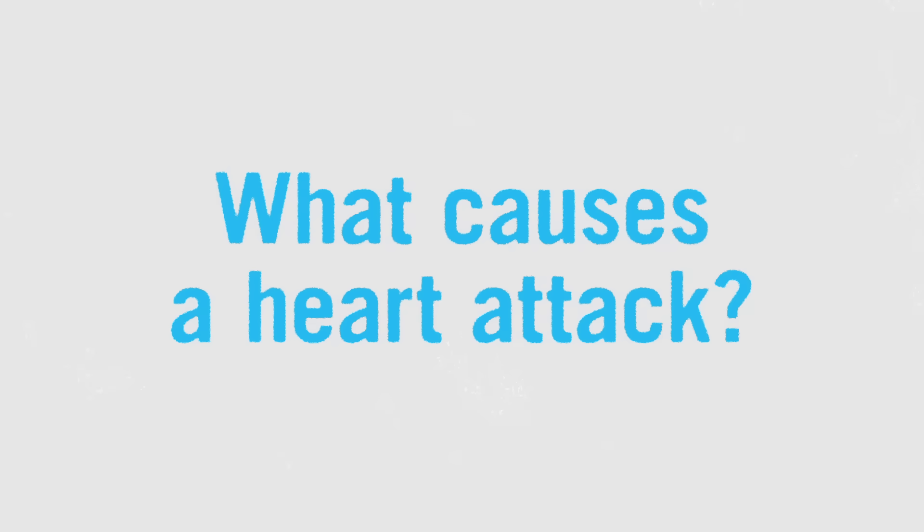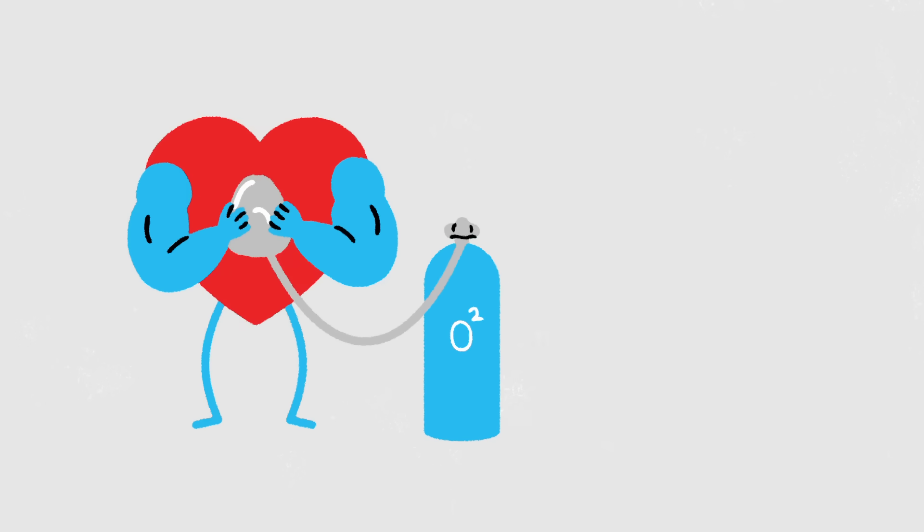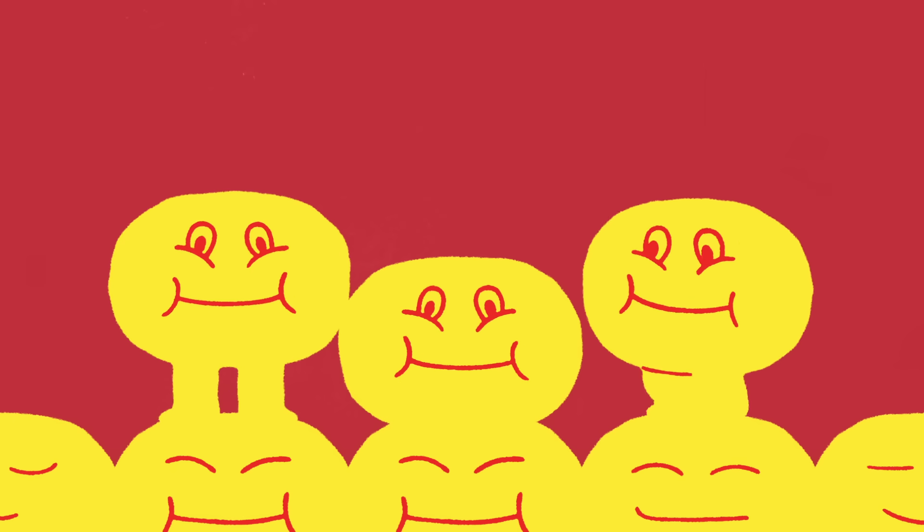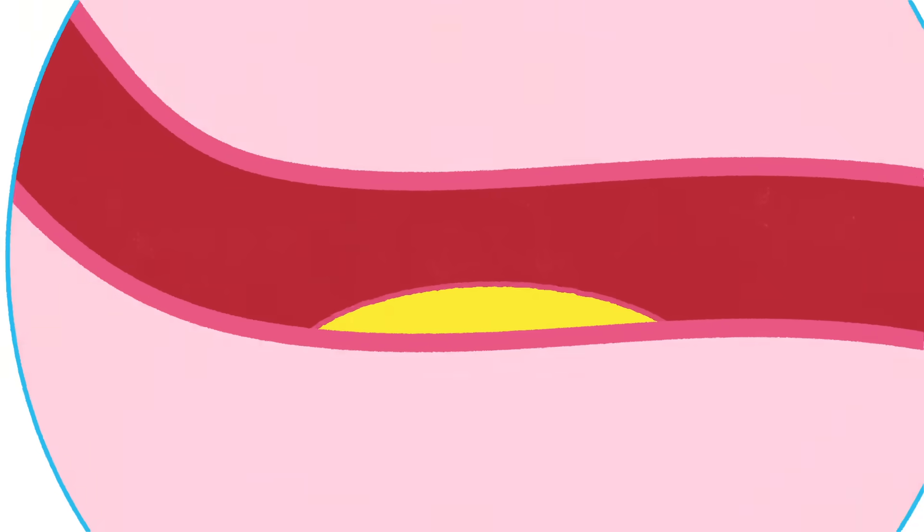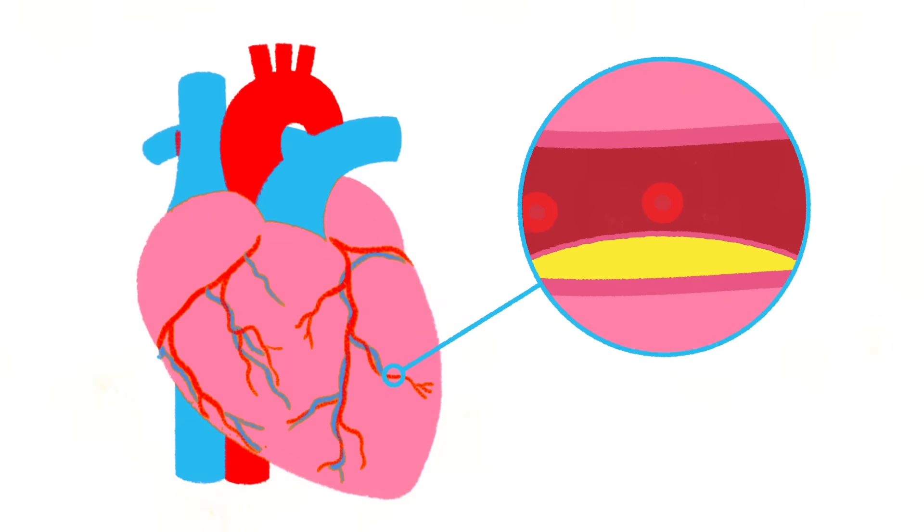So what causes a heart attack? Like all muscles, the heart needs oxygen, and during a heart attack, it can't get enough. Fatty deposits, or plaques, develop on the walls of our coronary arteries. Those are the vessels that supply oxygenated blood to the heart.